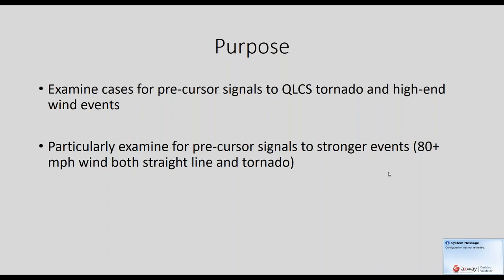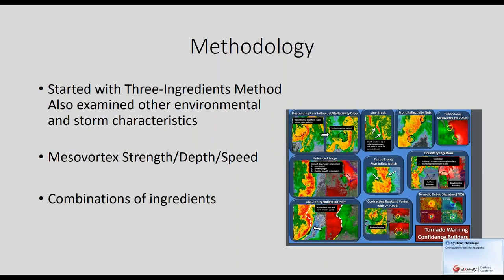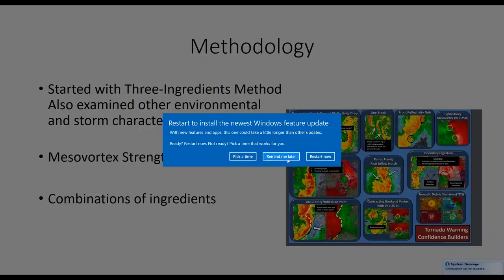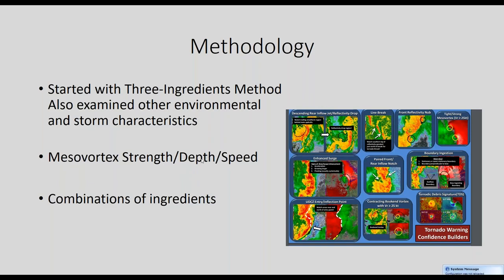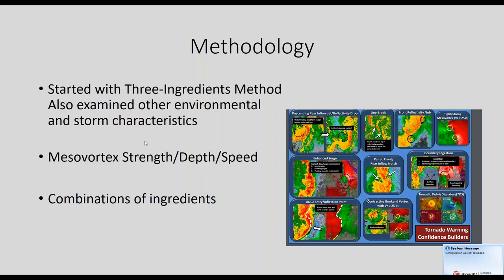So we want to go a little further than the current system, which kind of identifies yes or no tornado warning — being a little more yes or no versus is this going to be something we're really going to be concerned about that really has the potential to cause damage to life and property. We started with a three ingredients method and also examined other environmental and storm characteristics. I tried to take the three ingredients method and then add a handful of other ingredients that might work — things like the mesovortex strength, the depth, the rotational speed or rotational velocity, and combinations of ingredients. We collected each piece of data individually so we could recombine them in multiple different ways.